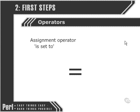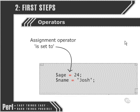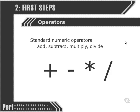The first operator we've already run into is the assignment operator. It looks like the equal sign that we're used to in mathematics, but in programming languages such as Perl we refer to this as 'is set to.' In these instances, the variable age is set to 24 and the variable name is set to Josh. So what the assignment operator does is take a variable and set it to a certain value.